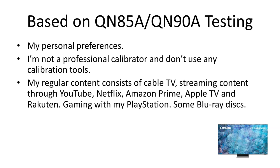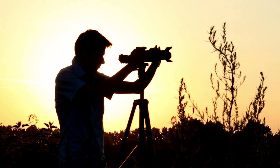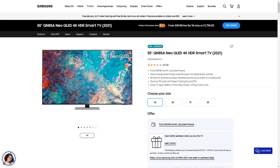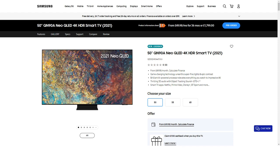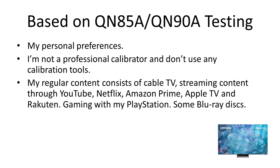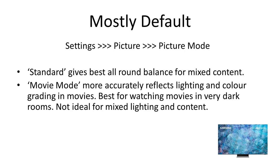The picture settings I'm going to discuss are based on my personal preferences. I don't use professional calibration tools, as I'm not interested in making the content look exactly as the creator intended. I'm an ex-professional photographer, so I like to think I have an eye for image, colour, and detail. The TVs I tested were the QN85A and the QN90A, but these settings should be good for most of the 2021 A-Series Neo QLEDs. I'm looking for the best settings for mixed content — movies, TV shows, cable TV, occasional sports, streaming via YouTube, Netflix, Amazon Prime, Apple TV, and Rakuten — as well as weekend gaming on my PlayStation 5 and very rarely watching Blu-ray discs.